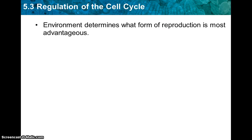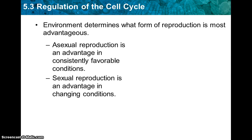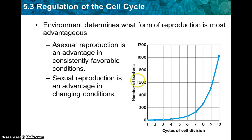The environment determines what form of reproduction is most advantageous. Asexual reproduction is an advantage in consistently favorable conditions, and sexual reproduction is an advantage in changing conditions. Bacteria will reproduce faster in stable conditions — same temperature, same amount of oxygen. Some bacteria can form a million bacteria in ten days, whereas our reproduction takes nine months. As long as conditions remain constant, you'll have a higher rate of asexual reproduction.